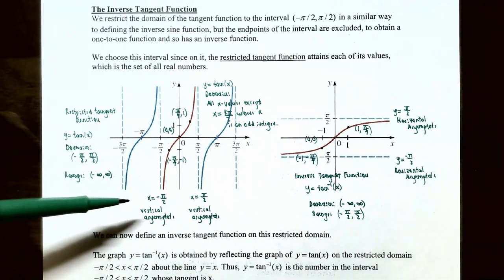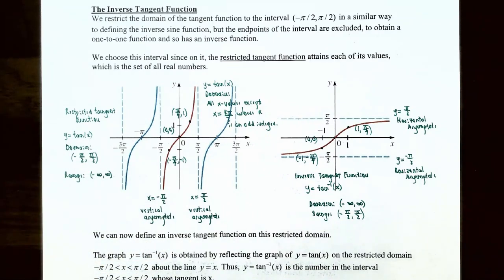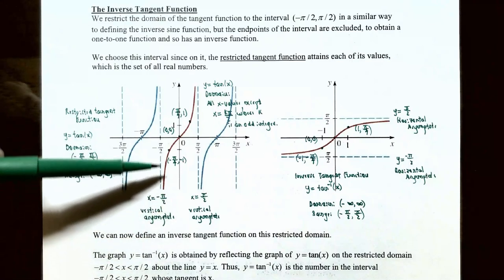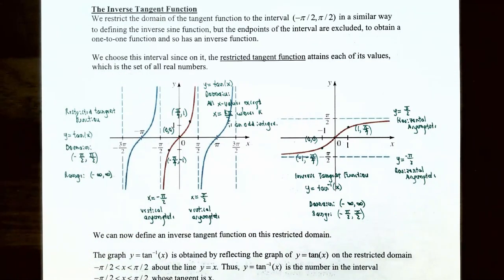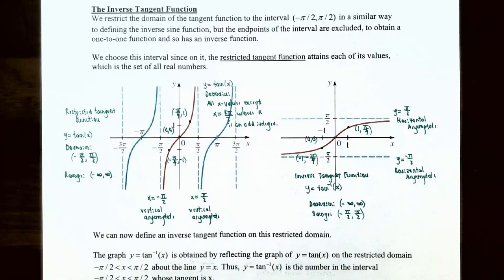You have vertical asymptotes at x equals negative pi over 2 and x equals positive pi over 2 because at those x values the tangent function is undefined. So we restrict the tangent function to between negative pi over 2 and pi over 2, not including the endpoints, to get the restricted tangent function. Its range is from negative infinity to positive infinity — it attains each output value on this restricted domain. Reflecting this graph across the line y equals x gives us the inverse tangent function.